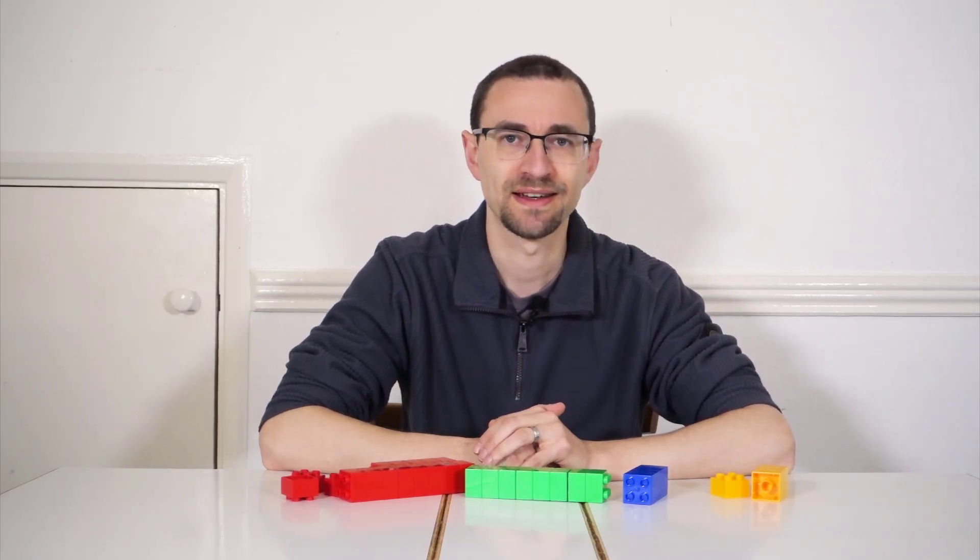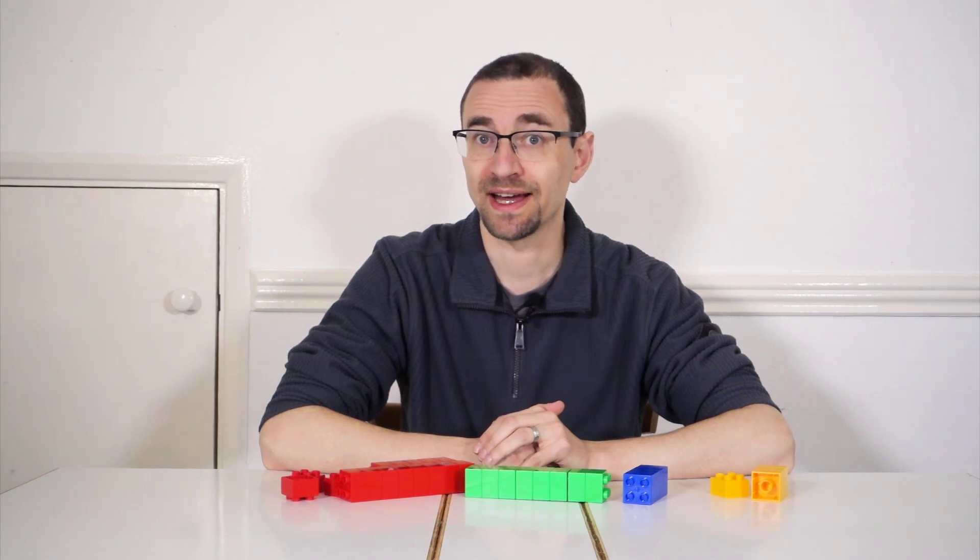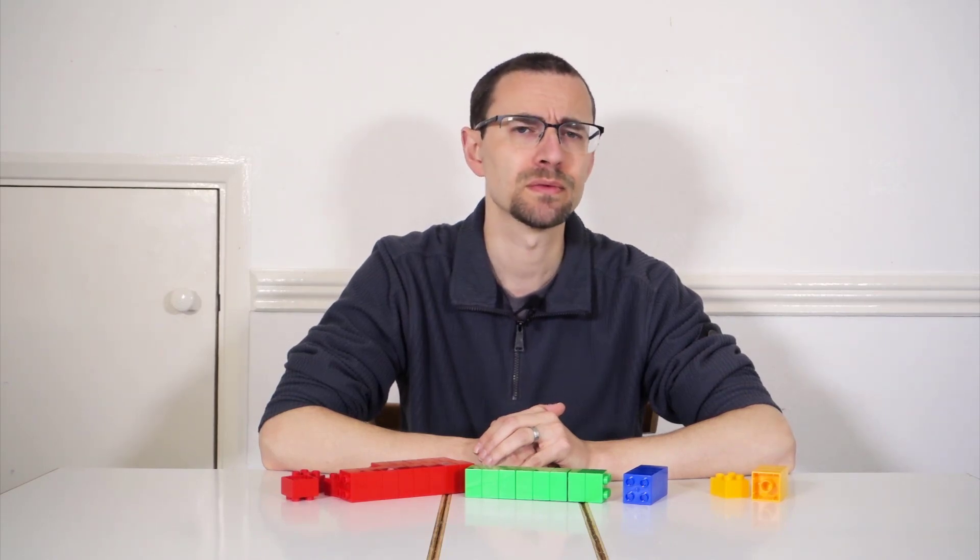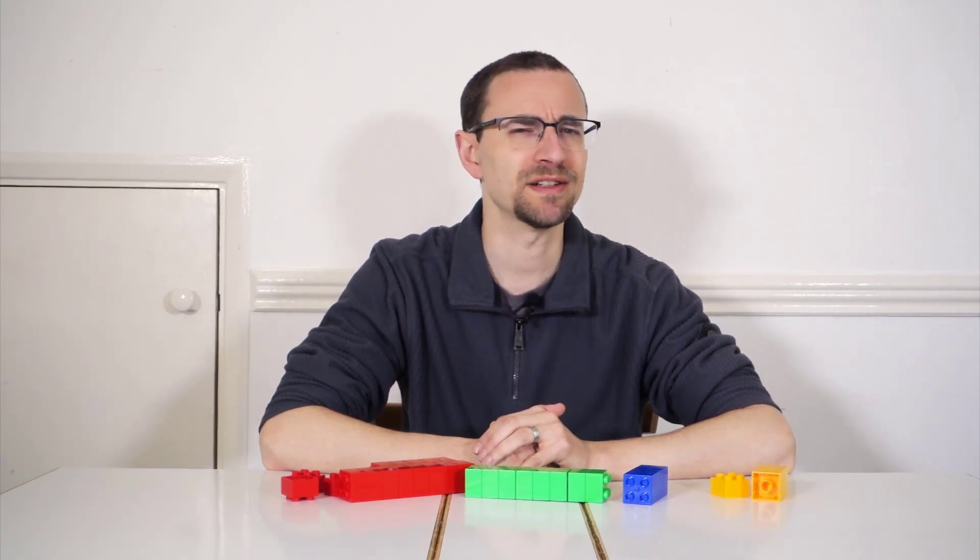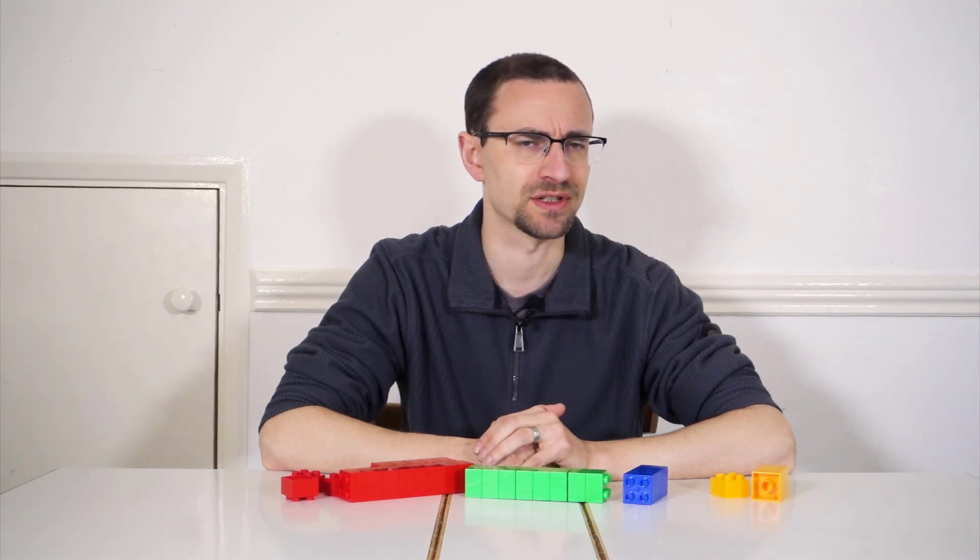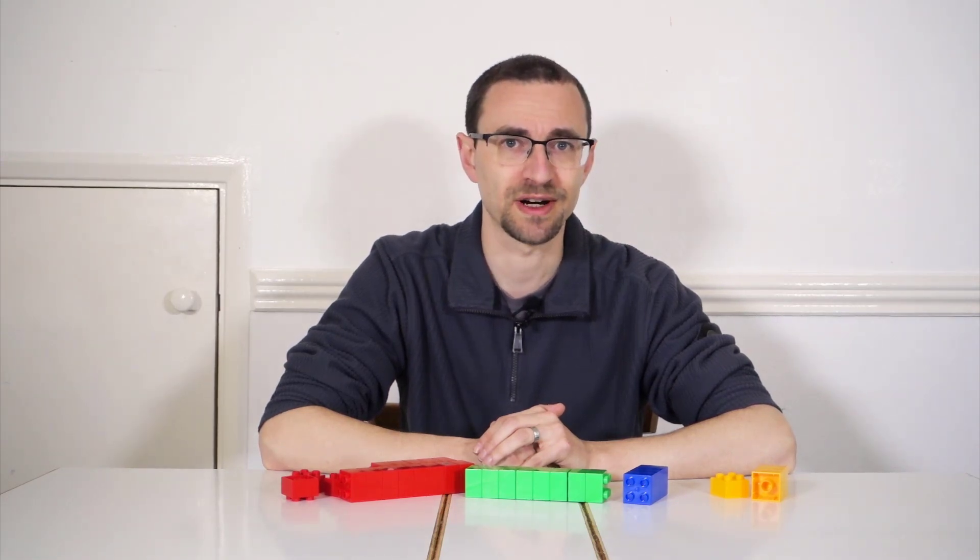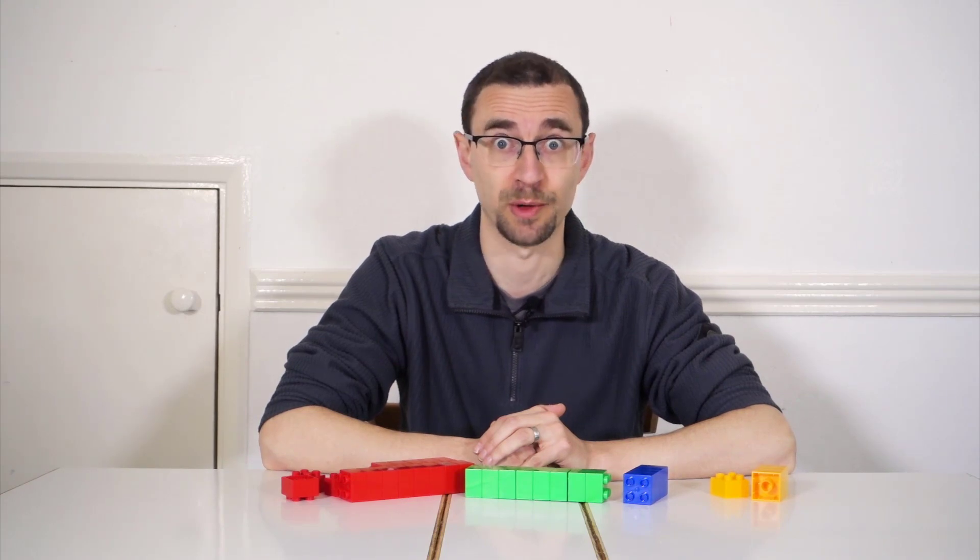But what about values that are guaranteed to be unique? Say, your primary key. Here, each value can appear at most once. Which leads some people to ponder an interesting question. Why has the database created a histogram on my sequence assigned primary key?